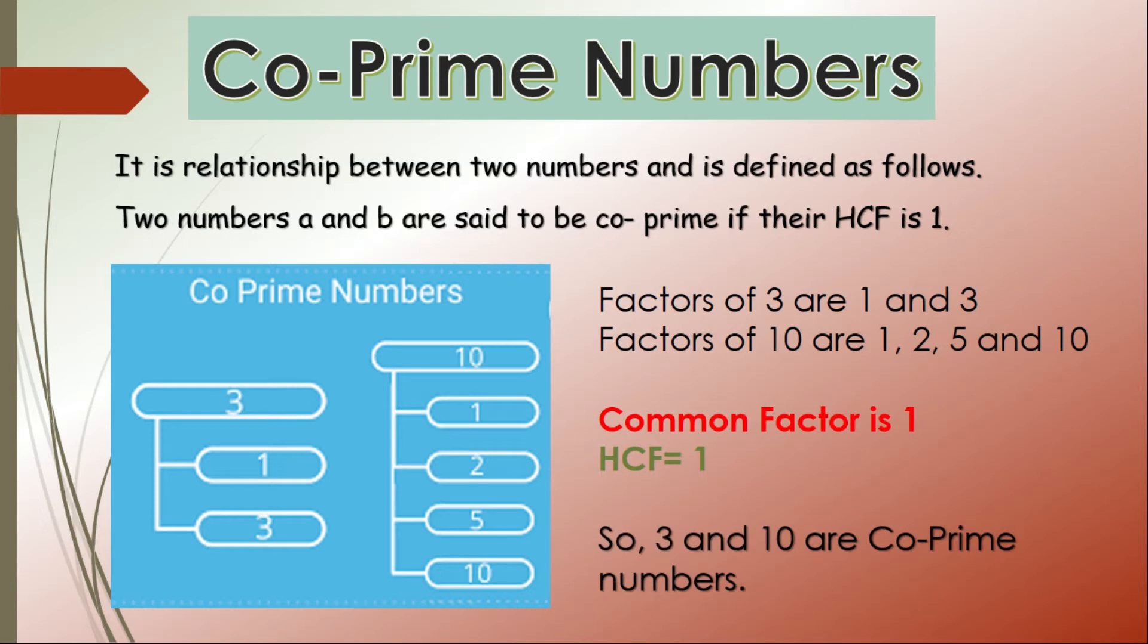Basically you need to consider whether it is a prime number or a composite number. Here 3 is a prime but 10 is a composite number, but still it doesn't matter. You just have to check the common factors - if the HCF is 1, that means those two numbers are co-prime numbers.